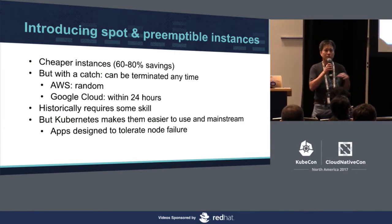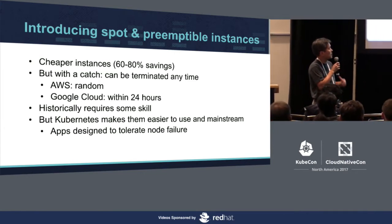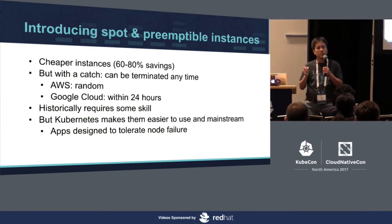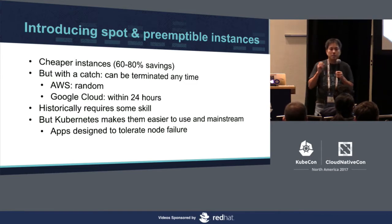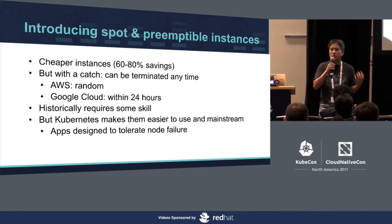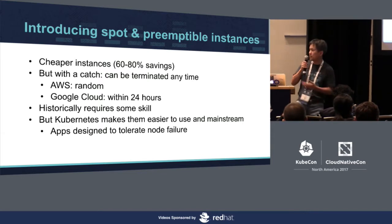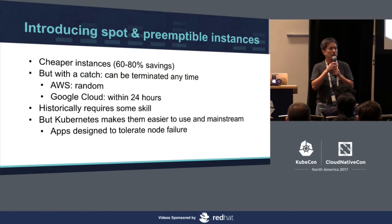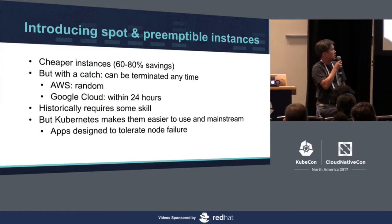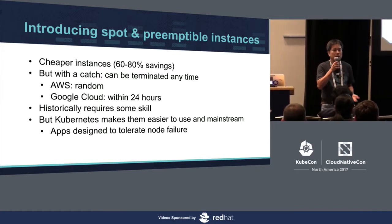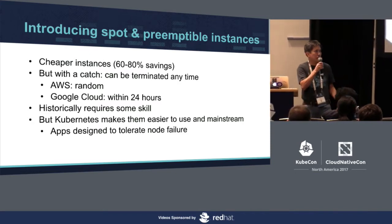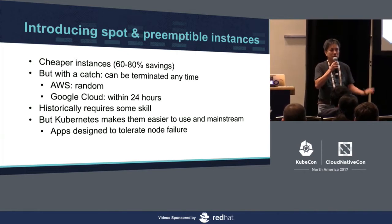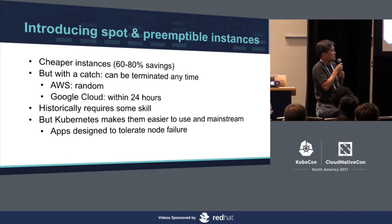However, they come with a drawback. The issue is spot instances or preemptible instances can be terminated at any time for reasons beyond your control. For example, on AWS, if the real-time price exceeds your bid price, you can lose the instance. On Google Cloud, they can get terminated for a variety of reasons. And even if nothing happens, after 24 hours you're guaranteed to lose the instance by policy.